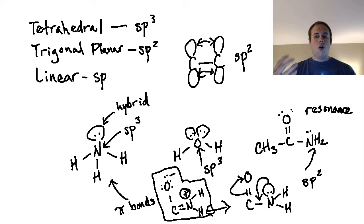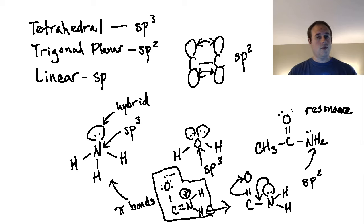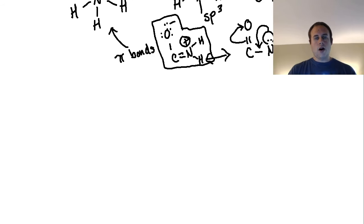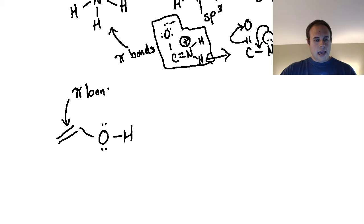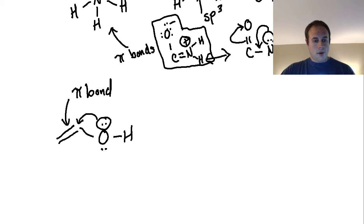The nitrogen in the amide holds on to a p orbital and becomes sp2 hybridized because it's involved in the delocalization of that lone pair. The lone pair doesn't exist right on top of the nitrogen like it does in ammonia, where we see sp3 hybridization. The hard and fast rule: if you ever find a lone pair on any atom that is one space away from a pi bond, that lone pair will exist in a p orbital.